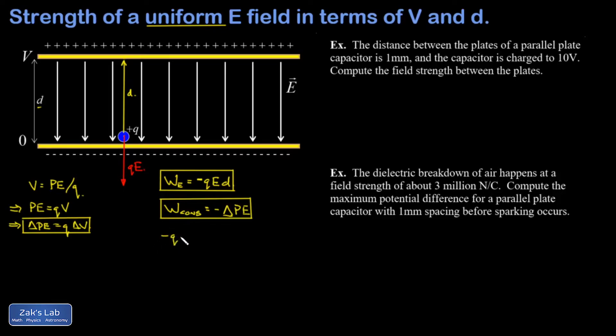Plugging into this, the work done by the conservative force is negative QED, and the negative of the change in potential energy is negative Q times the change in potential. The change in potential is the final minus initial, or V minus zero. The minus signs cancel, the Qs cancel, and we arrive at ED equals V. We're interested in expressing the electric field magnitude in terms of that potential difference and the distance between the low and high sides.